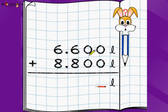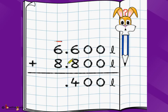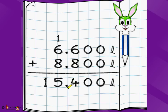Now let's take 6.600 liters plus 8.800 liters. Write one below the other and start from the rightmost digit — 0 plus 0 is 0, 0 plus 0 is 0, 6 plus 8 is 14. We write 4 here and carry 1 to the next neighbor — which is before the decimal point. That's fine because 1 liter is 1000 milliliters. So 1 plus 6 is 7, then 7 plus 8 is 15. The answer is 15.400 liters, or 15 liters and 400 milliliters.